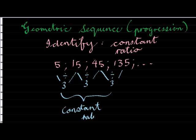This is a constant ratio. That is how I identify a geometric sequence. Sometimes it's also called a geometric progression, the same as the arithmetic can be called arithmetic progression.